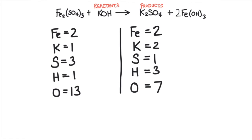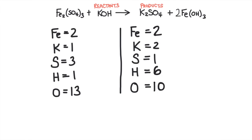Now there are two irons. There were three hydrogens, but now there are six hydrogens because we doubled the compound. There used to be three oxygens, but now there are six oxygens, and then we'll add that to the four oxygens over here, giving us a total of 10 oxygens. The iron atoms are now balanced on each side of the chemical reaction.